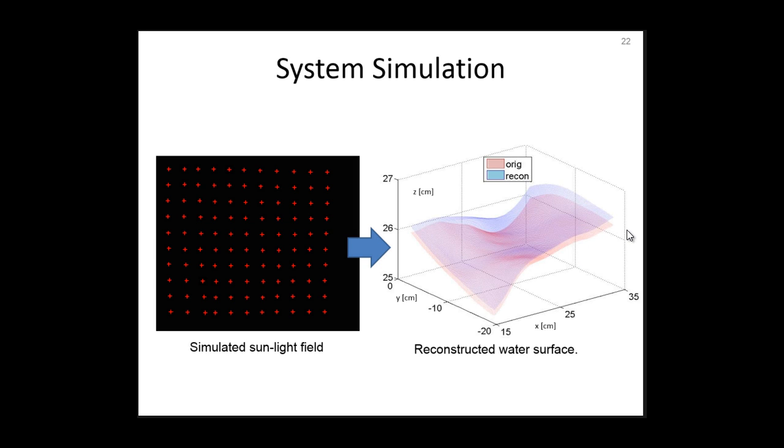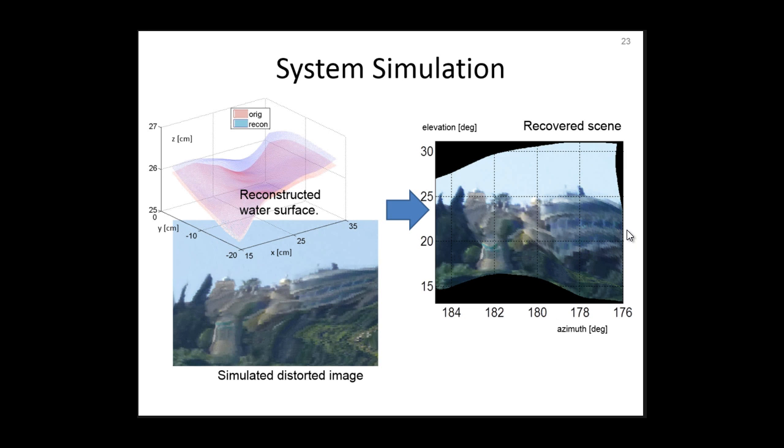Using the simulated sunlight field, the water surface shape is estimated. The reconstructed water surface is similar to the true one, but it exhibits a bias. It is a limitation of the system and further details are in the paper. Using the reconstructed surface, we recover the scene.